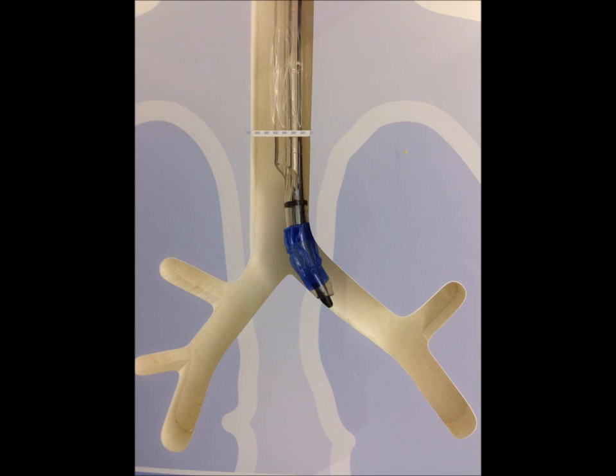If you advance the bronchoscope into the left side, then you can just thread it down. It almost always easily follows.